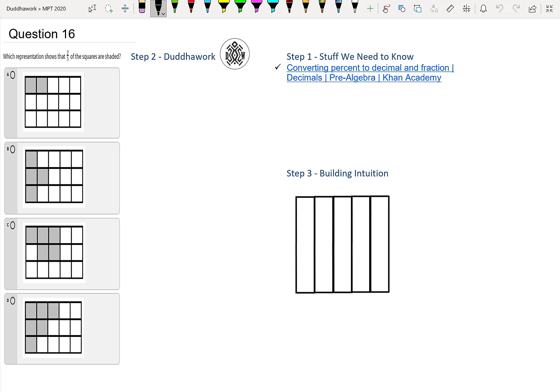We're asked which representation shows that two-fifths of the squares are shaded. So there's four options here and it's a grid. In this case it's three rows by one, two, three, four, five columns. So it's a 3 by 5 grid and that means there is 15 squares, right?